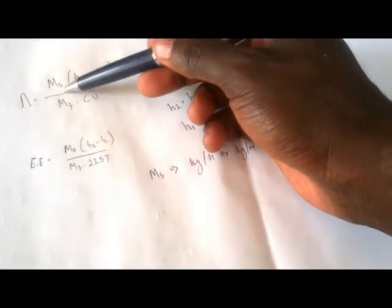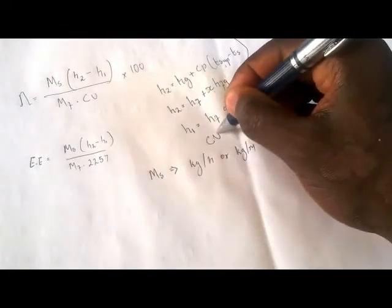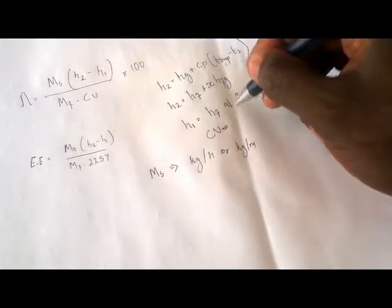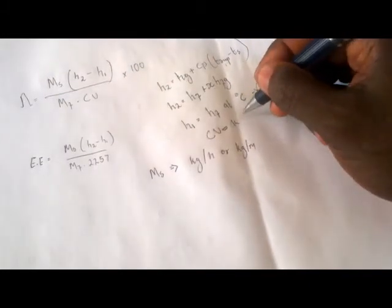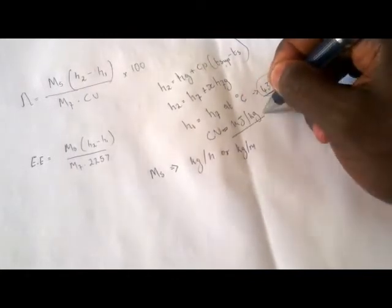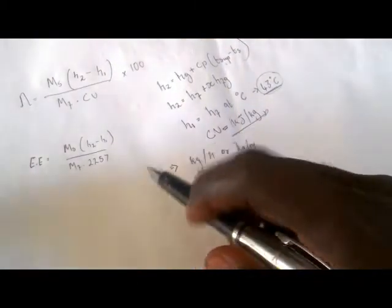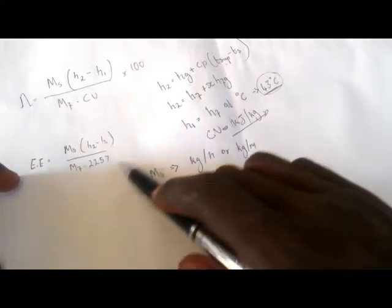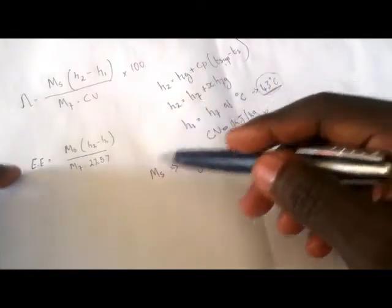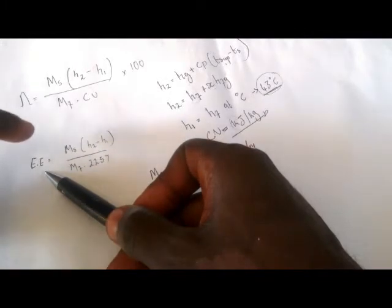Then we have the mass of the fuel multiplied by the calorific heat value. The calorific heat value must always be in kilojoules per kilogram. So if you are given it in megajoules, you have to convert from megajoules to kilojoules.